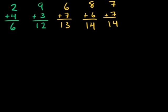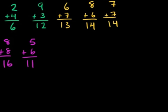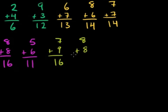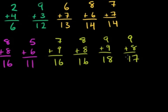8 plus 8 is 16 — these are things you'll hopefully be able to do super fast in the not too far off future. 5 plus 6 is 11. 7 plus 9 is 16, same as 8 plus 8. 9 plus 9 is 18. 9 plus 8 is 17. That's just a little warm up — we didn't do all possible combinations of one-digit numbers, but these are some of the ones that give people a little more headache.